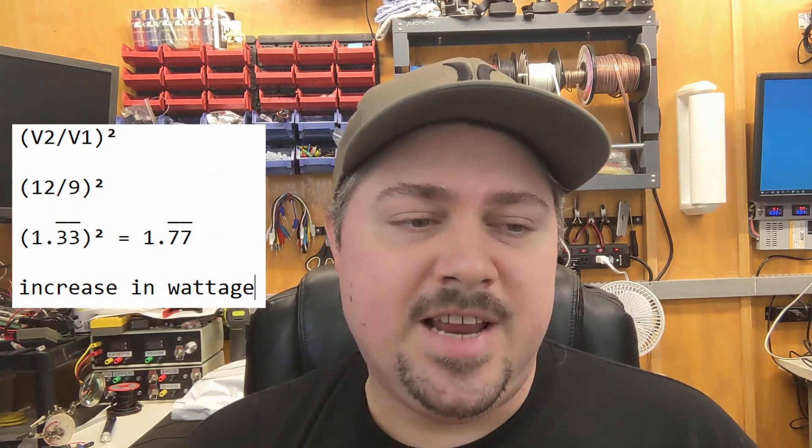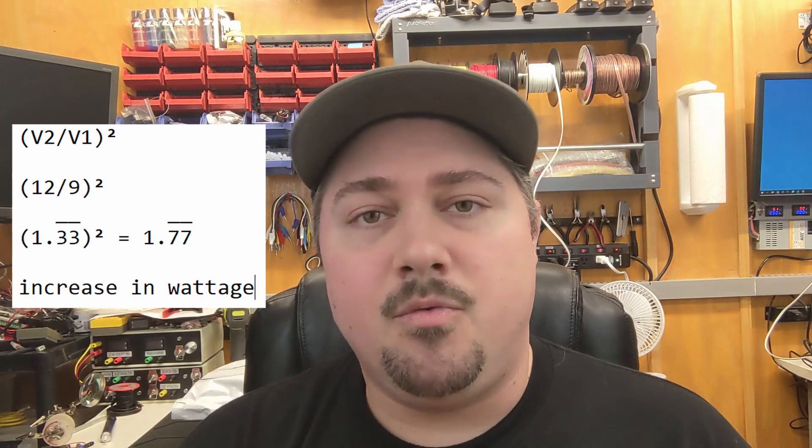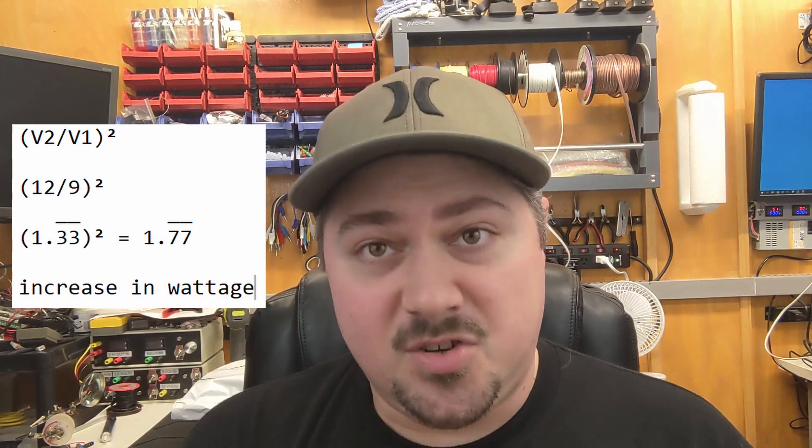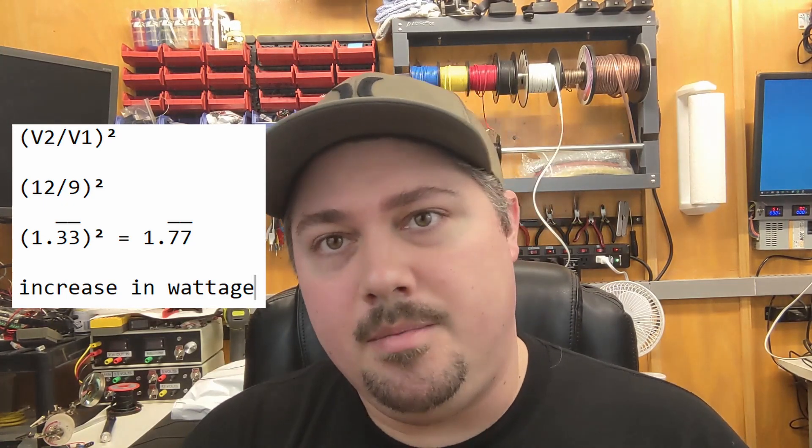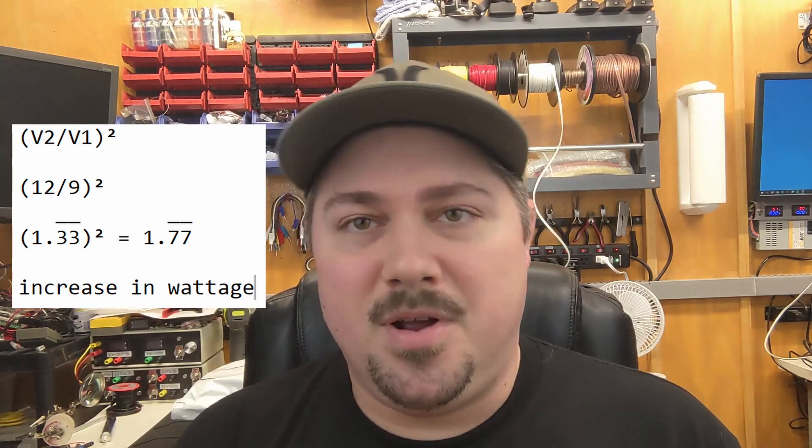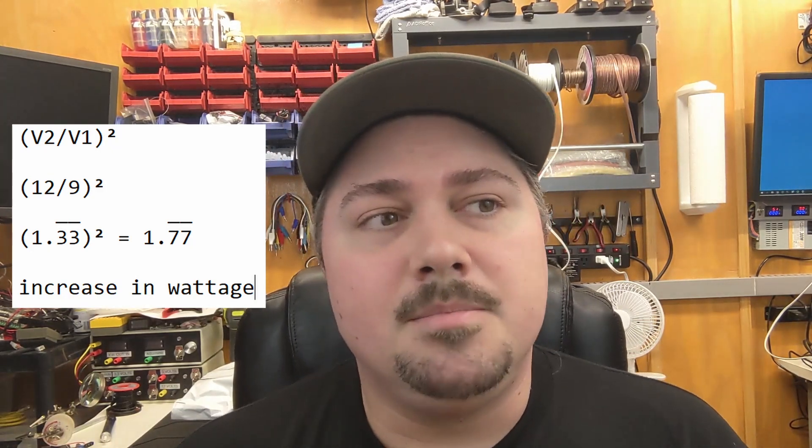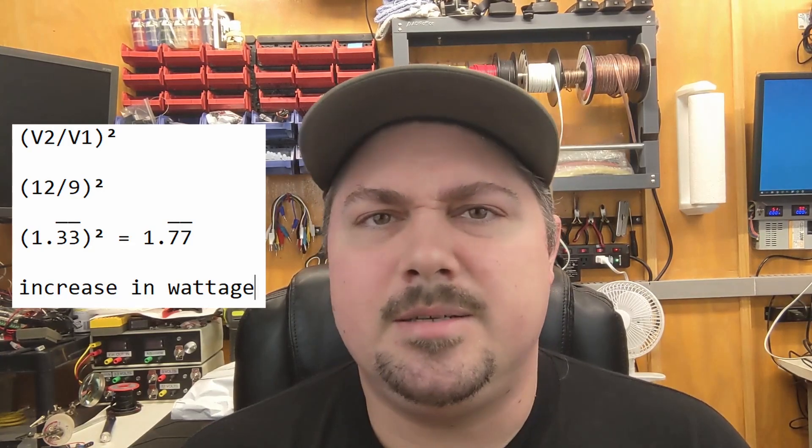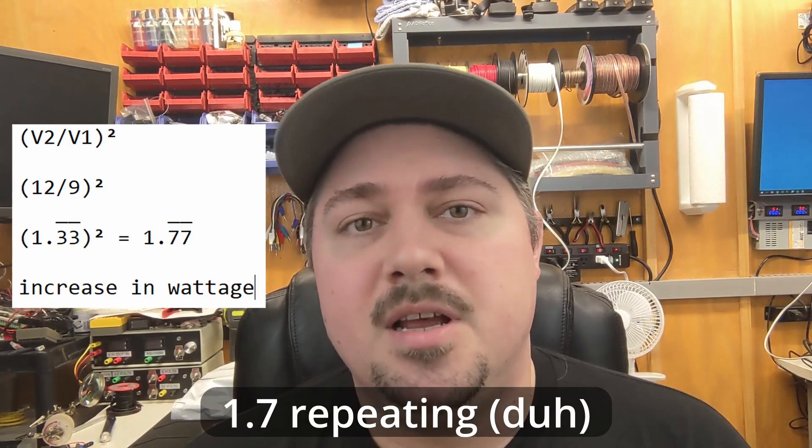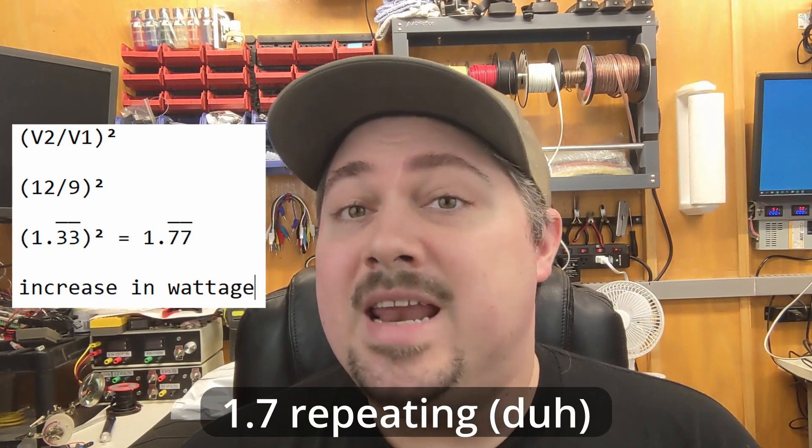So the formula we're going to use, this is a quick shortcut formula which I always love, we'll take 12 volts divided by 9, you get 1.33, and then we're going to square that. So it's 1.333 times 1.333, and it comes out to about 1.768. So it is a drastic increase in power, and that is something I'm taking into account.